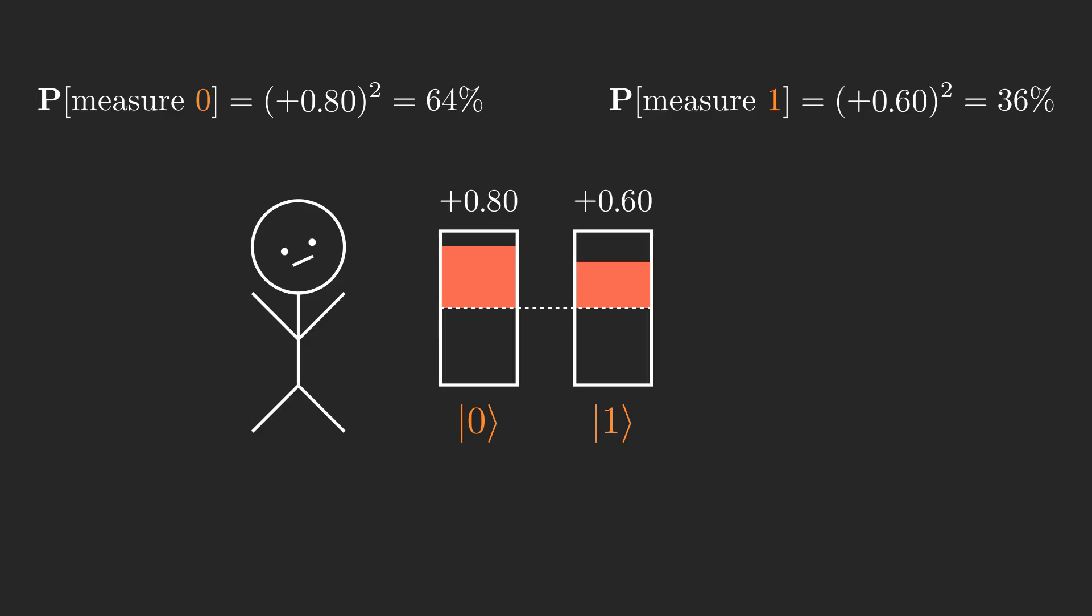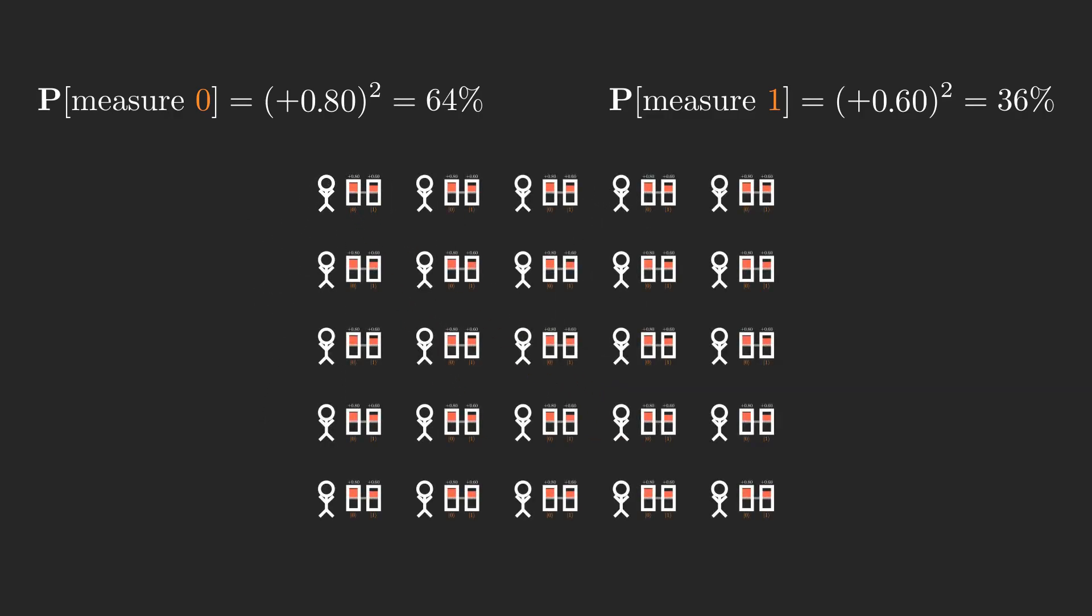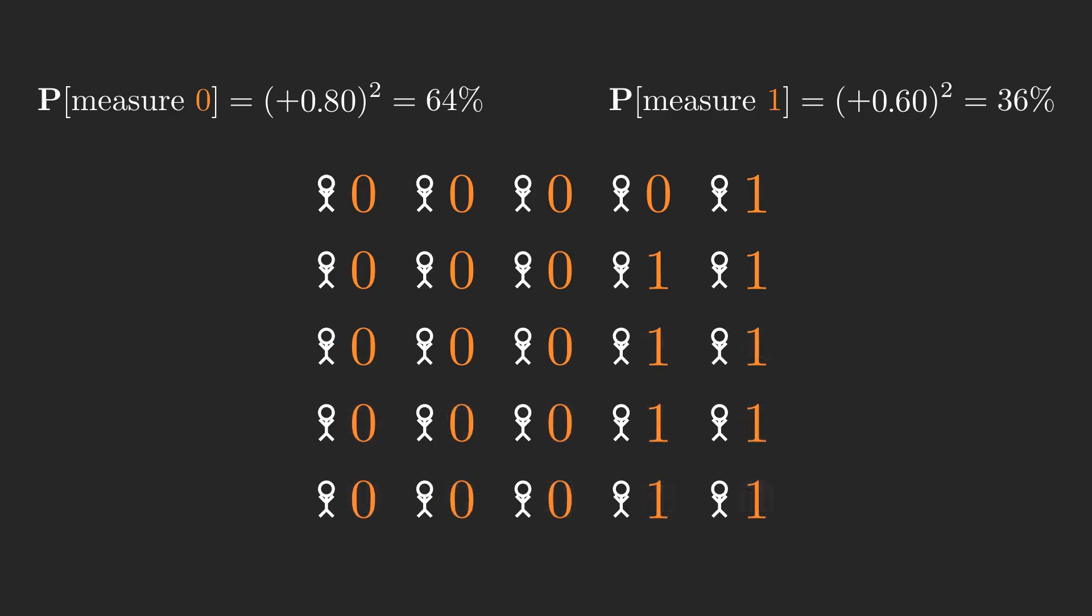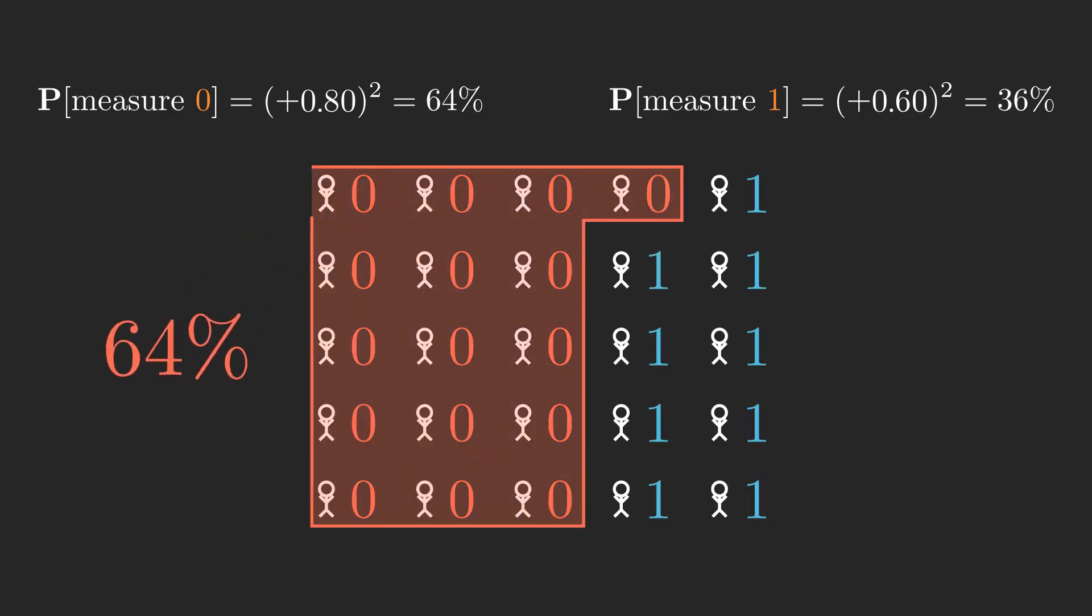This is a weird and inexplicable reality that we'll just have to be okay with. The very act of measuring is what causes the qubit to collapse. So in this example, if we were to measure this qubit in many parallel universes, we would expect to see 0 in about 64% of them, and 1 in the remaining 36% of them.